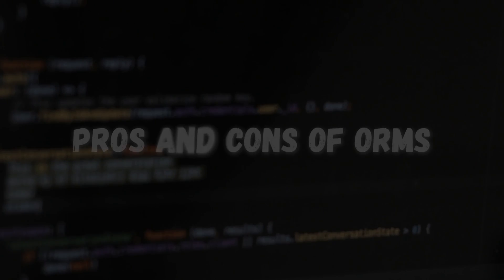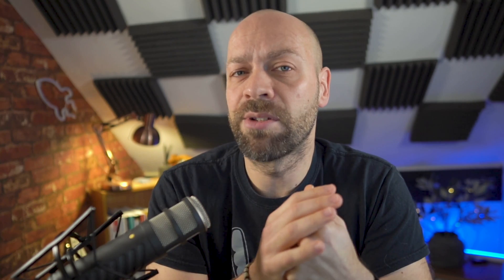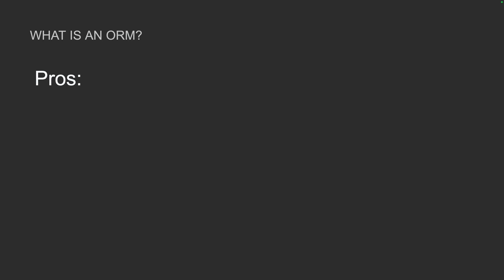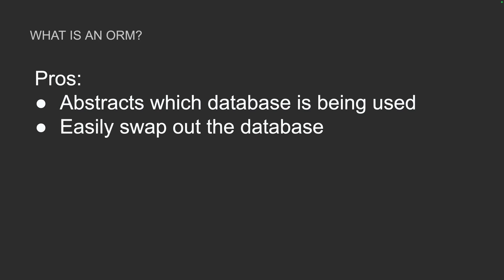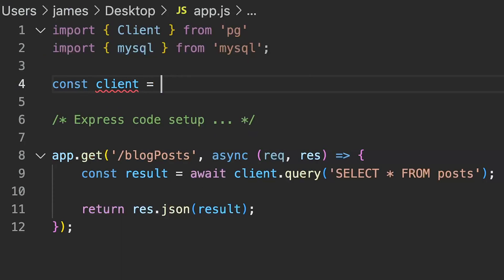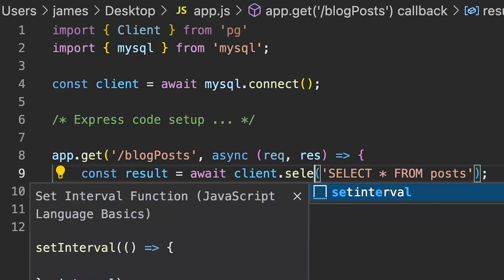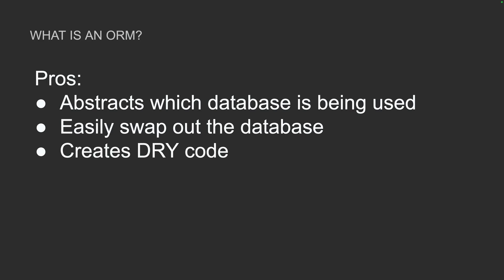So what are some of the pros and cons of using an ORM? Here are some pros to consider. It abstracts which database system you're using from the app code, so as a developer you don't really need to worry about which system is in place as the ORM handles everything for you. Another advantage is that you can easily swap the underlying database system for another one without having to change all of the logic in your code that works with the data. It also creates DRY code, as the data models are all kept in one place, making it easier to update, maintain, and reuse code.